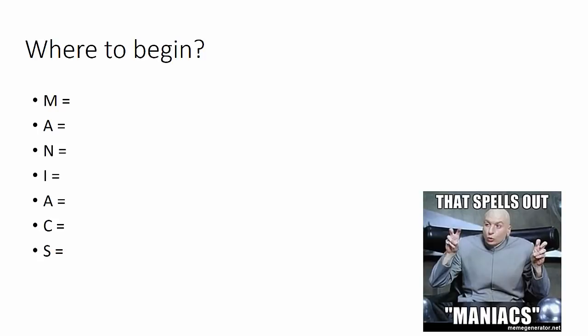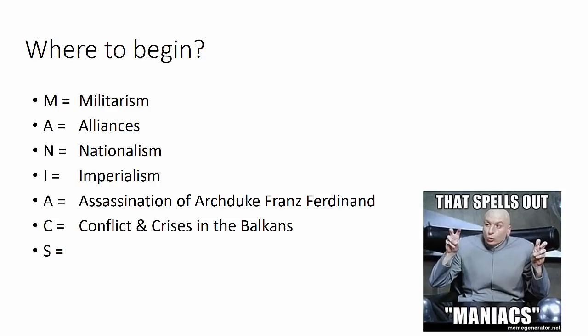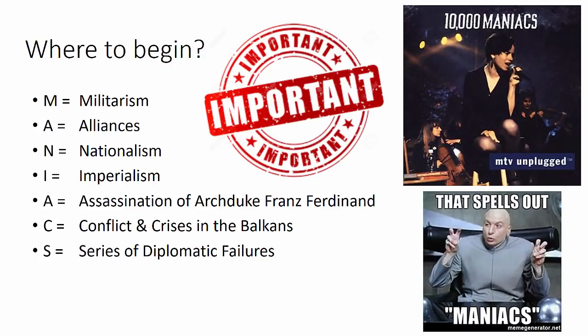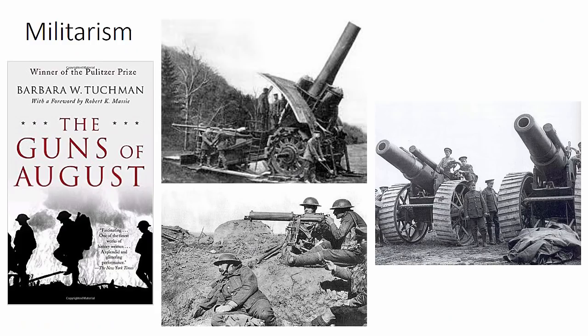Where to begin? Let's start with an acronym: MANIACS. MANIACS stands for militarism, alliances, nationalism, imperialism, the assassination of Archduke Franz Ferdinand, conflict and crises in the Balkans, and a series of diplomatic failures. Not to be confused with 10,000 Maniacs, the wonderful band from the 1980s and early 90s — but you guys have probably never heard of them.